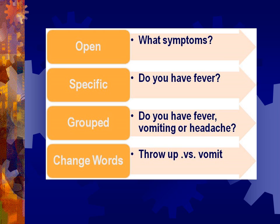Computers can ask about patient symptoms in different ways. You can ask an open-ended question such as 'What are the symptoms you're experiencing?' and patient responses are matched to keywords. It can ask if a patient has a specific symptom, as in 'Do you have fever?' It could ask about a cluster of symptoms such as 'Do you have fever, vomiting, or headache?' It might also change the words used, asking 'Did you vomit?' or 'Did you throw up?' — these get to the same underlying symptom but use different words.